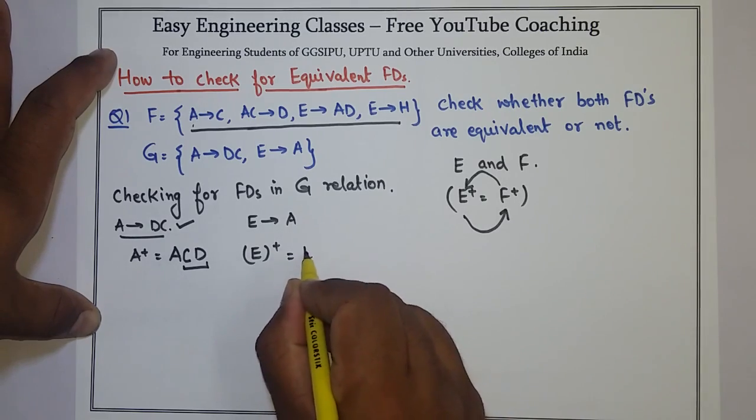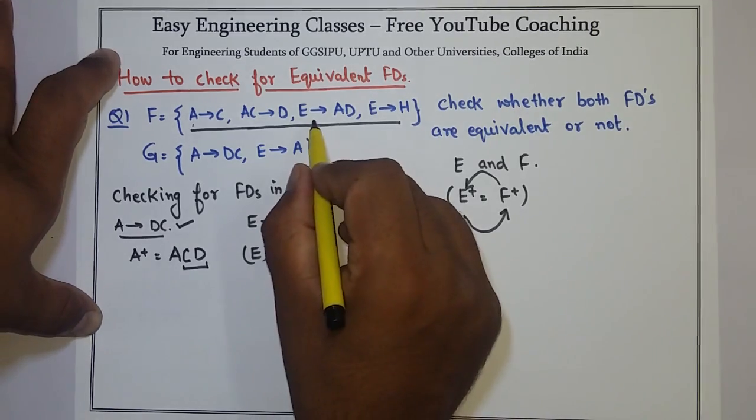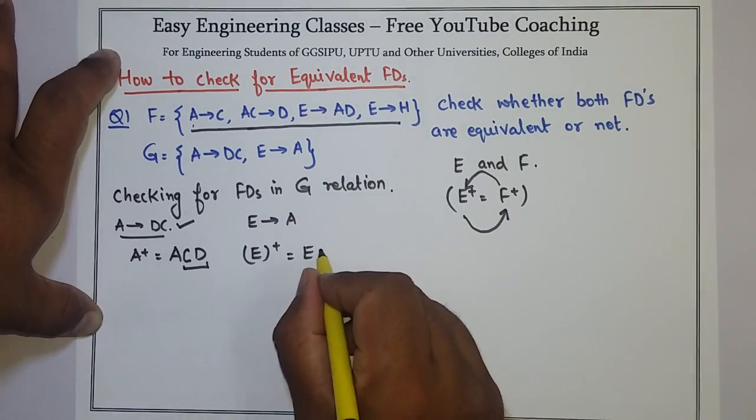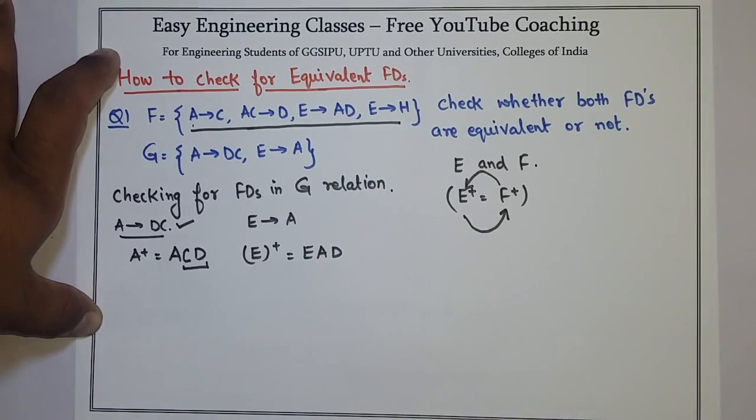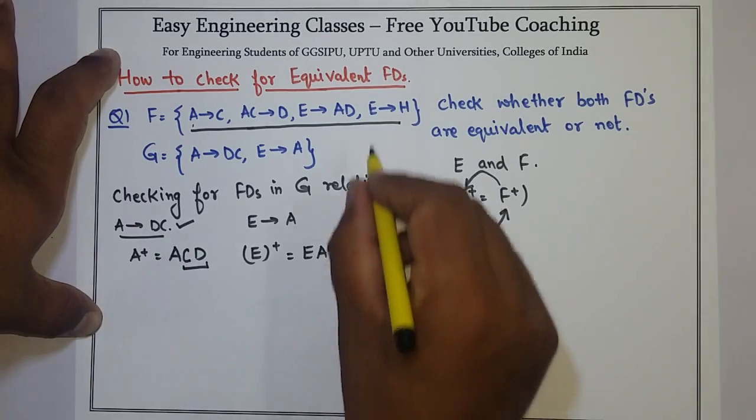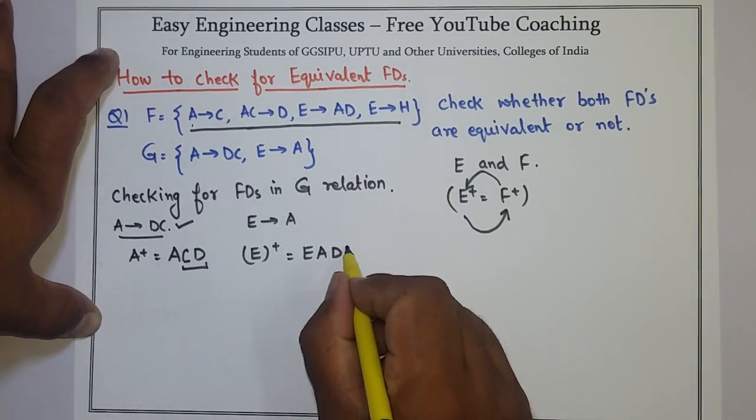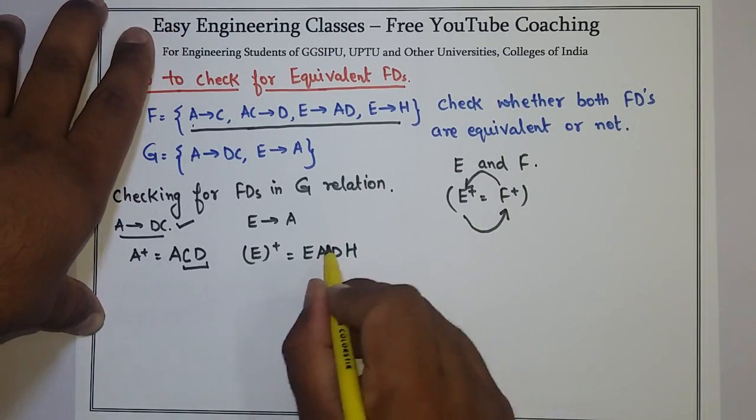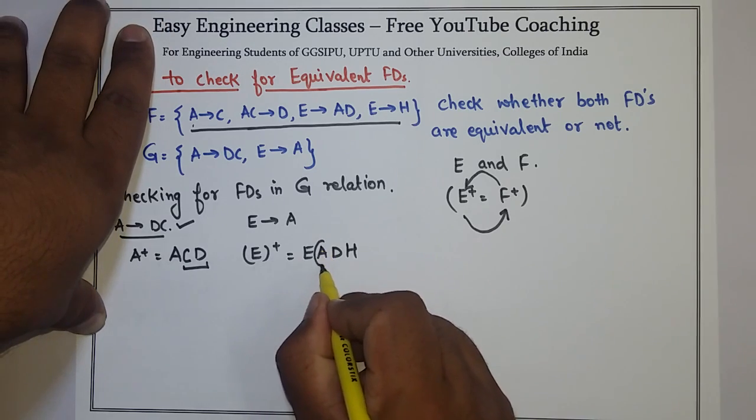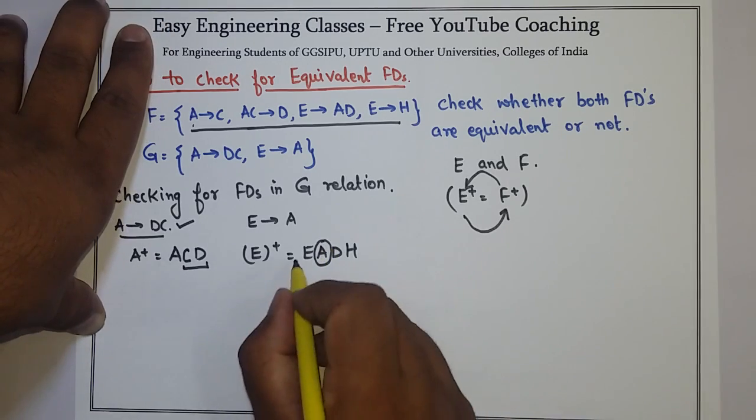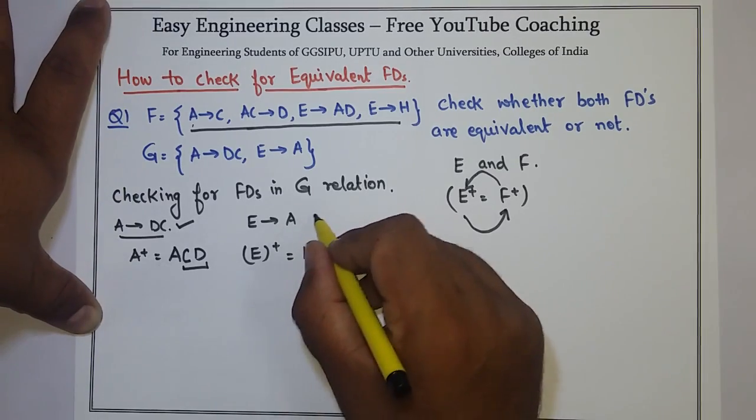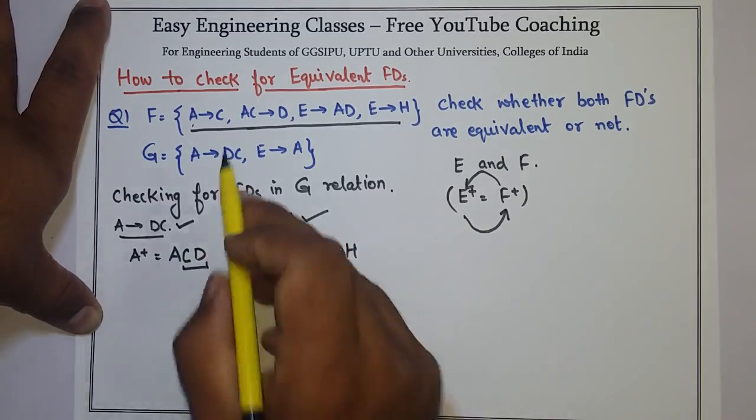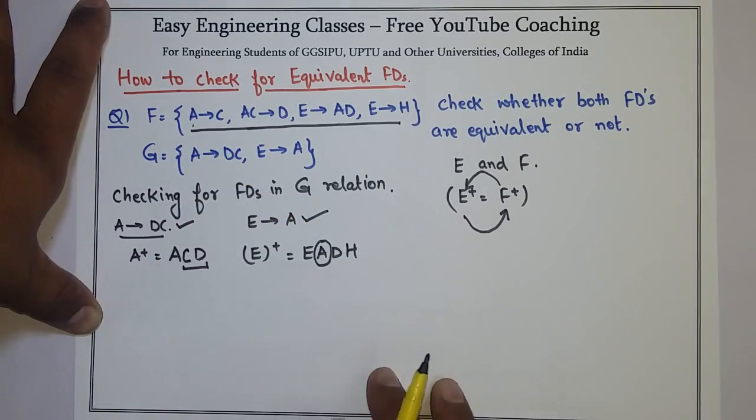So E plus is E. From E I can determine AD, so AD, and from E also I can determine H, so H. Now I can see that in E's closure, attribute A is covered. That means I can also infer this FD, E determines A, from a given set of FDs in F.